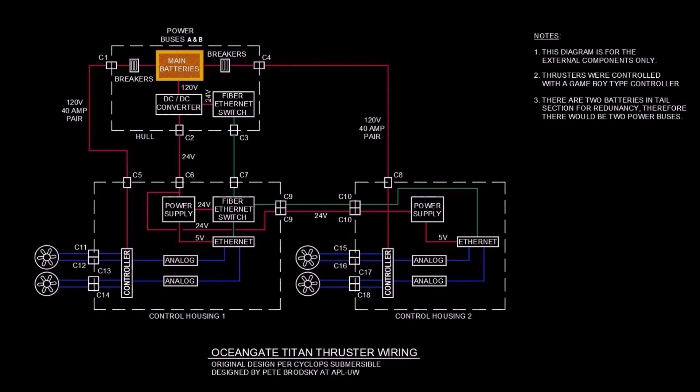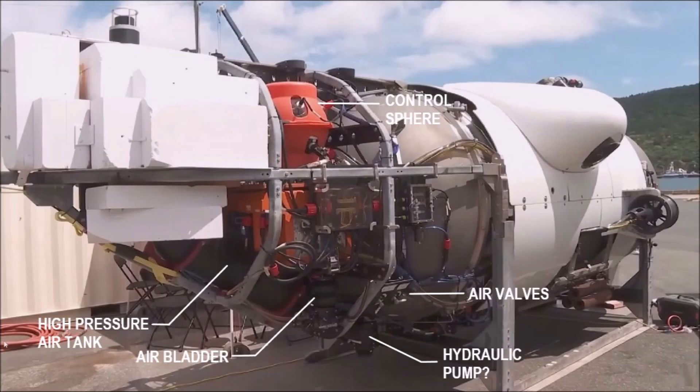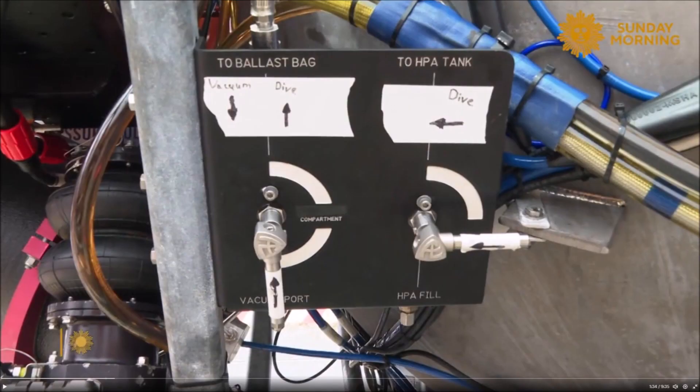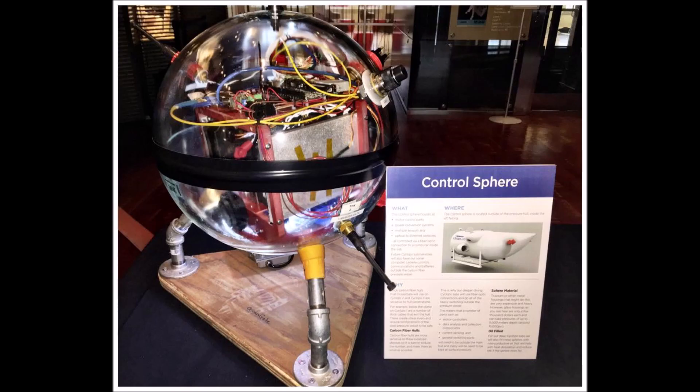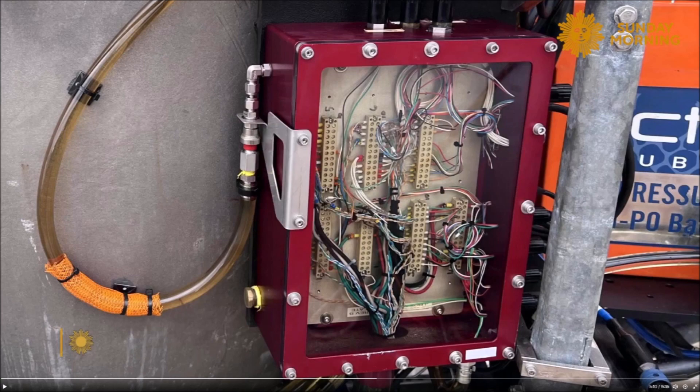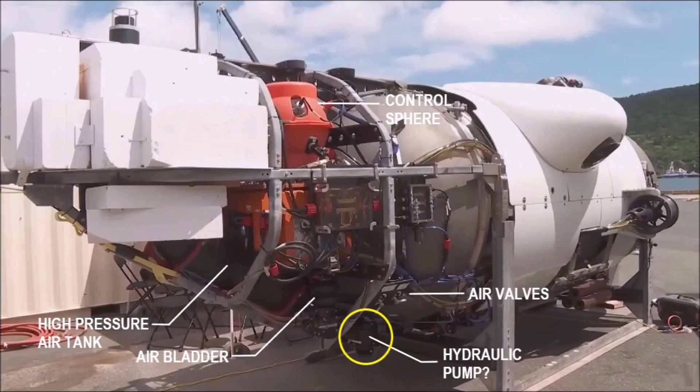Other external systems included a high-pressure air tank, what I assume is two air bladders, a set of air valves, the two control spheres on the top, and those orange covers, and hydraulic fluid-filled J-boxes. I believe that the hydraulic pump was located here. It appears that tubing goes to that device from the port in the interface ring.